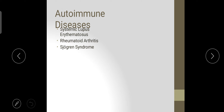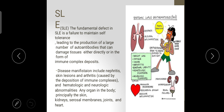Examples of autoimmune disorders include systemic lupus erythematosus, rheumatoid arthritis, and Sjögren syndrome. In systemic lupus erythematosus, the fundamental defect is failure to maintain self-tolerance, leading to production of large numbers of autoantibodies that damage tissue either directly or as immune complex deposits. Disease manifestations include nephritis, skin lesions, arthritis, and hematologic and neurological abnormalities, affecting principally the skin, kidney, serosal membranes, joints, and heart.